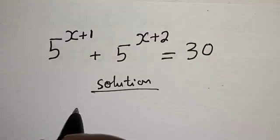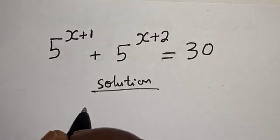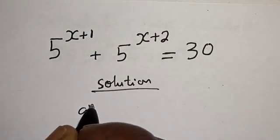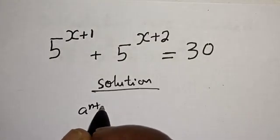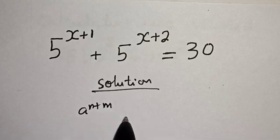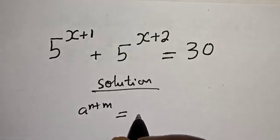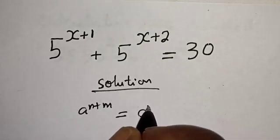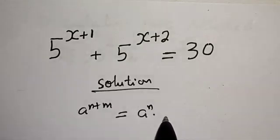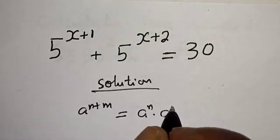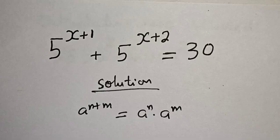Take note of this exponential rule: a raised to power n plus m is equal to a raised to power n, multiplied by a raised to power m.